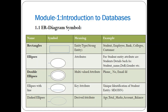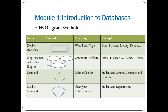The next symbol is a double rectangle, called a weak entity type. A weak entity type does not have a primary key attribute, but it can have a partial key. The partial key gives a set of entities with the same attribute from the same entity type. For example, in a bank payment entity type, the payment number attribute can be considered as a partial key.